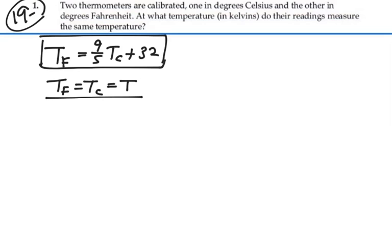So we basically want to solve that T is equal to nine-fifths T plus 32 because the Fahrenheit and the Celsius temperature are the same value T. So let's solve this for T.